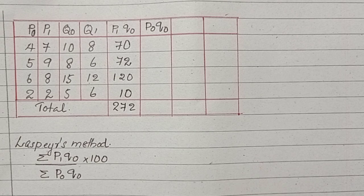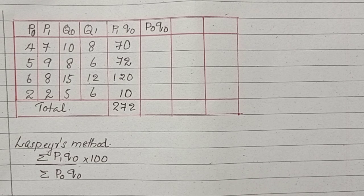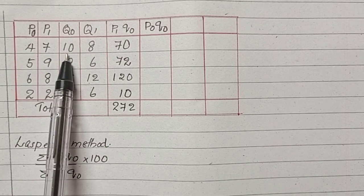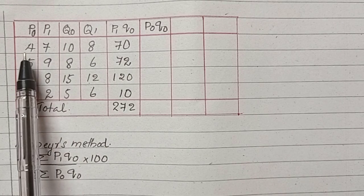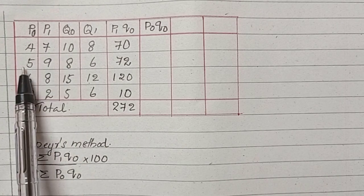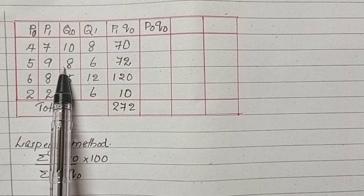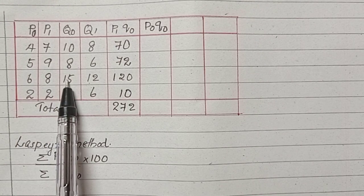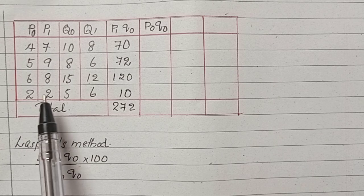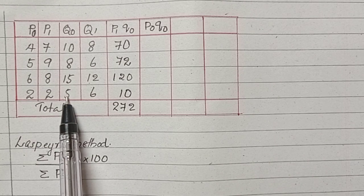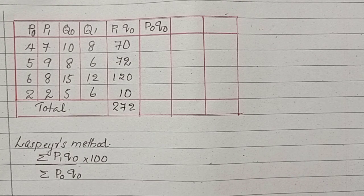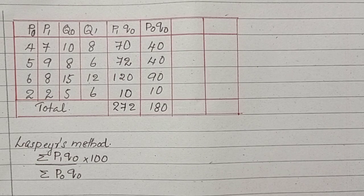Next one is P0 into Q0. P0 is 4 and Q0 is 10, 4 into 10 is 40, 5 into 8 is 40, 6 into 15 is 90, 2 into 5 is 10, and finding the total. Its total is 180.